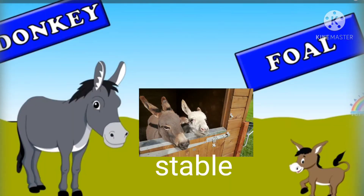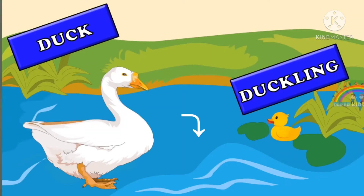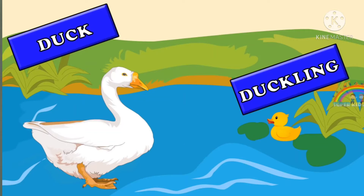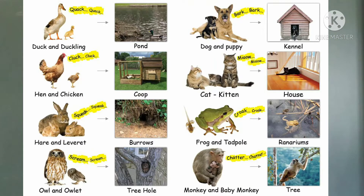Next, donkey. The baby of the donkey we say foal, and the house of the donkey we say stable. You know children - duck. The duck lives in the pond. The baby of the duck we say duckling. There are many animals, their young ones, and their houses. Make a chart like this as I have shown.